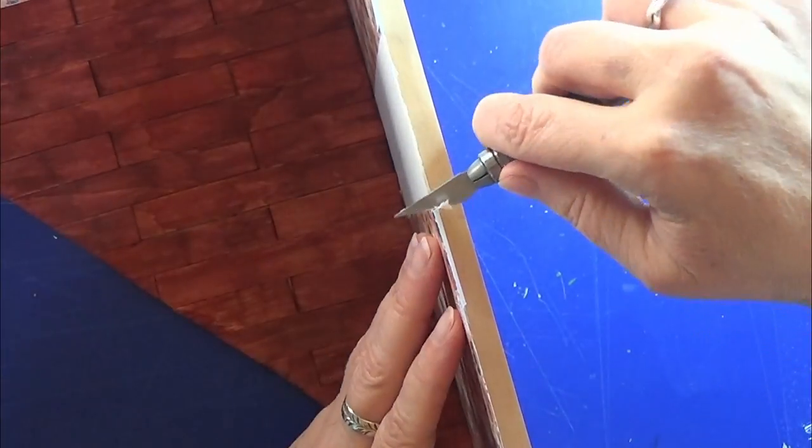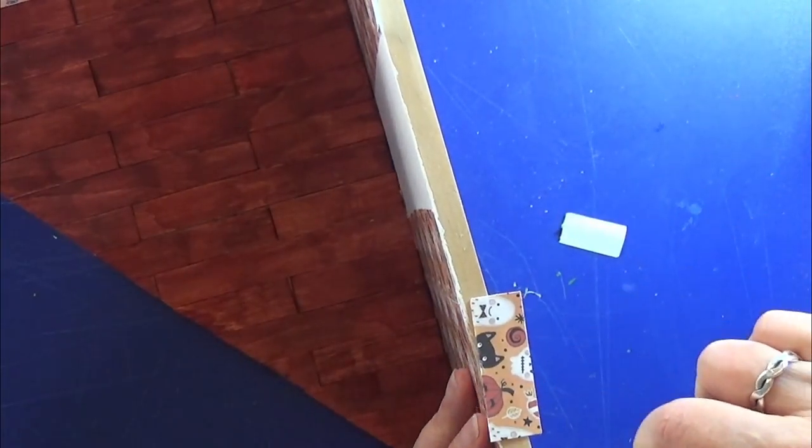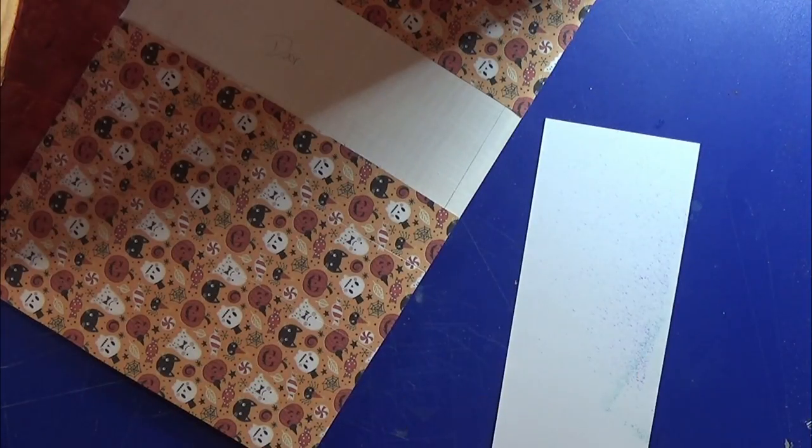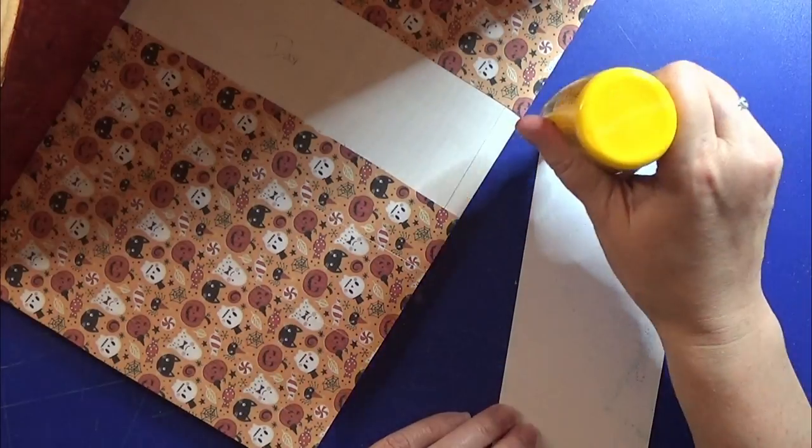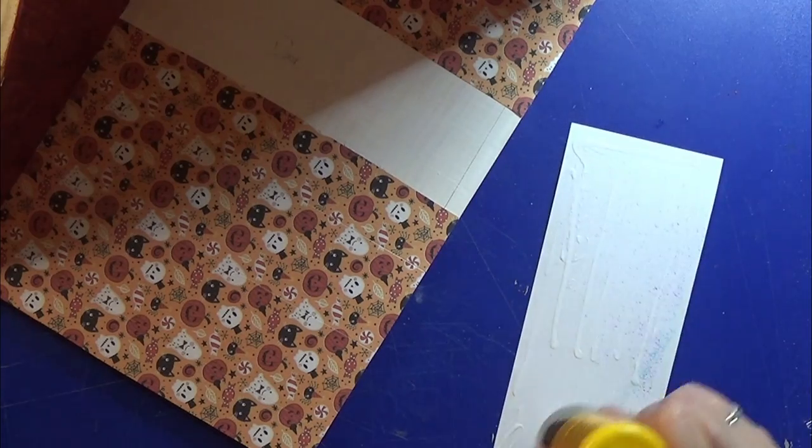Now my wallpaper is all dry so I can just take my knife and cut off the excess of it. I do that in every place where I have some wallpaper hanging over. Then I am going to take my door and glue it in place.